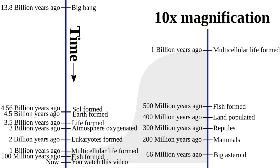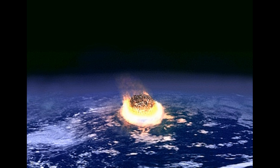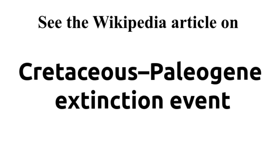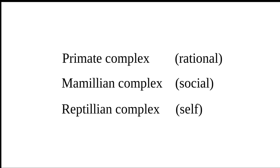Sixty-six million years ago, the Cretaceous-Paleogene extinction event occurred. A large asteroid impacted the Yucatan Peninsula in southern Mexico, triggering a lingering impact winter. A large portion of the self-interested reptiles went extinct, while the more altruistic mammals survived. This event prepared the way for the emergence of the primate complex, a third layer in our brains that gives us the ability to reason.